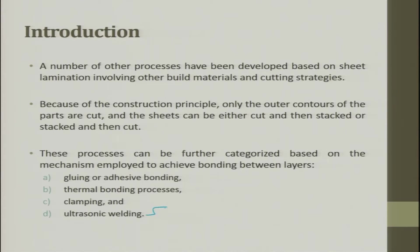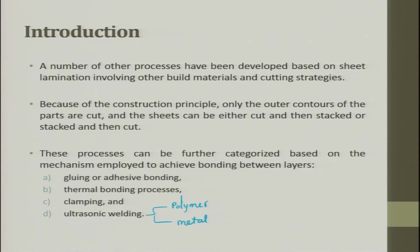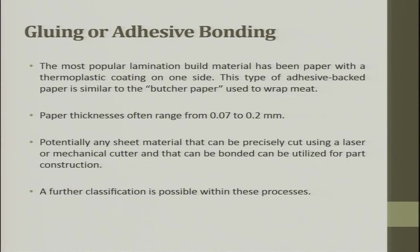These processes can be further categorized based on the mechanism employed to achieve bonding between layers: gluing and adhesive bonding, thermal bonding where only heat is applied, clamping, and ultrasonic welding. Ultrasonic welding is used for polymer processes. For metals, the oxide layer is removed and the nascent layer comes in contact and glues. Between layer to layer you can use ultrasonic welding to bond.